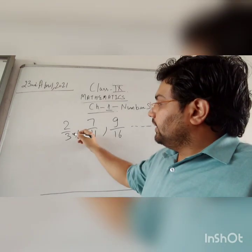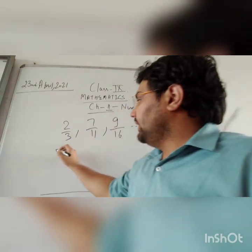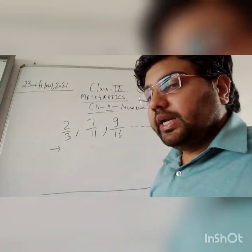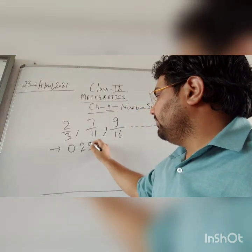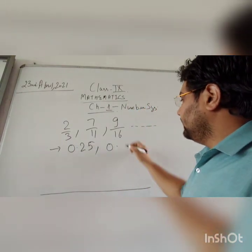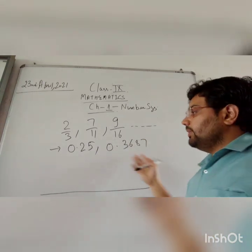Now you can find the decimal expansion also of these numbers. If I write decimal expansion in the terminating category, the rational numbers will be like 0.25, 0.3687. These numbers are terminating in nature.